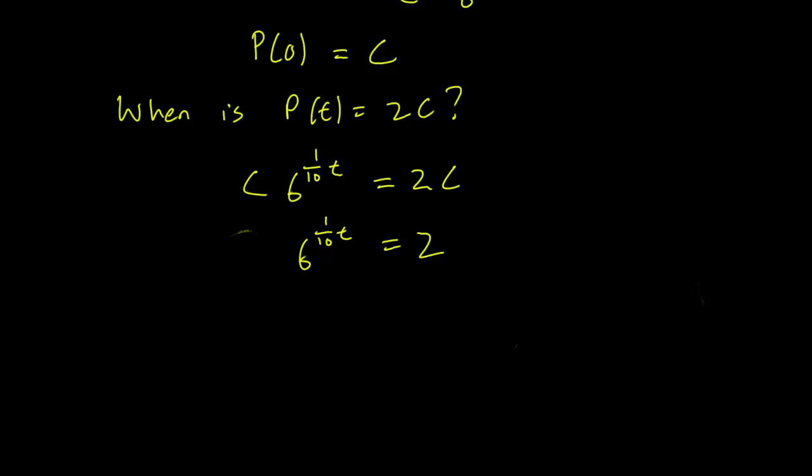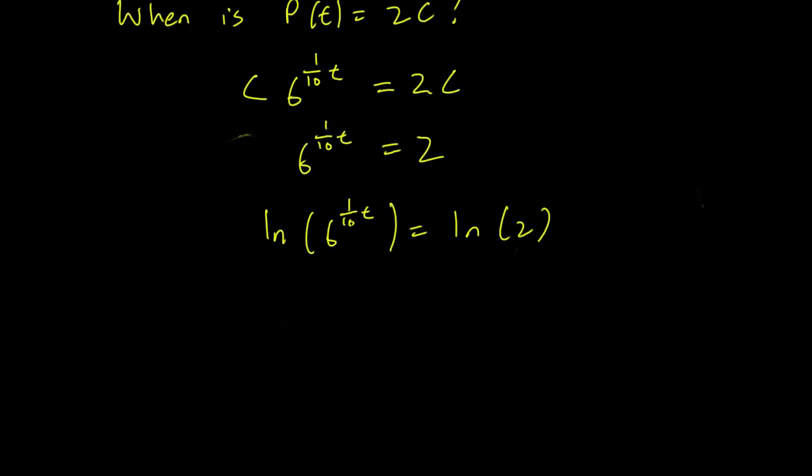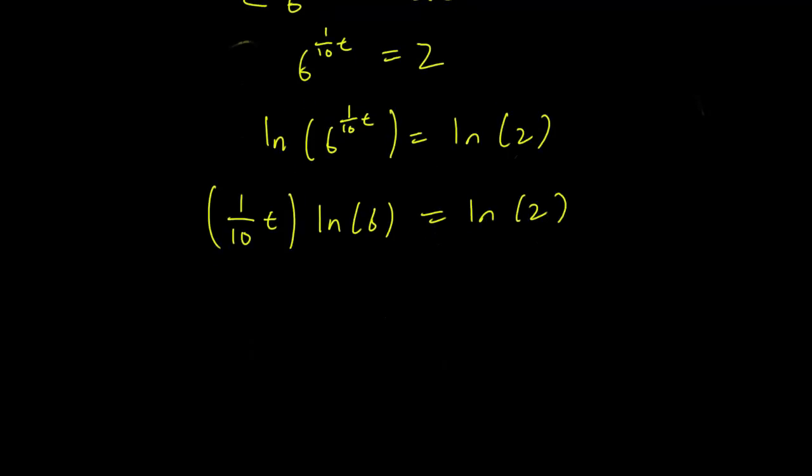And we have t in the exponential of 6 here. So the thing to do is that we have to take logs on both sides again. Log of 6 to the 1 over 10t equals log 2. And remember, when we take logs, we can move the exponential to the front. We have 1 over 10 times t times log 6 equals log 2. From here, it's pretty easy to obtain that t is equal to log 2 over log 6 times 10.